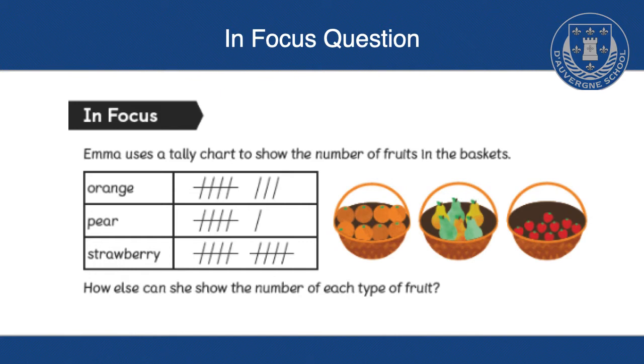If we look at the tally chart, we notice there are tally marks. We know that when we see four tally marks with an extra one through the middle, that represents five, so we don't need to count them.